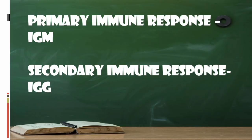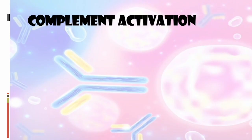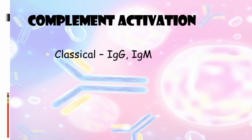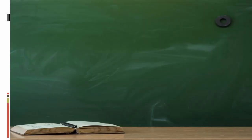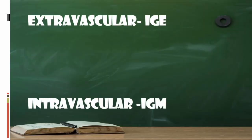A few confusing summary points: Primary immune response is IgM; secondary immune response is IgG. For complement activation — 'General Manager is very classic' — so classical pathway is IgG and IgM, and the alternative pathway is IgA. For distribution — extravascular is IgE (EEE), and intravascular is IgM (IIM). Thank you so much.